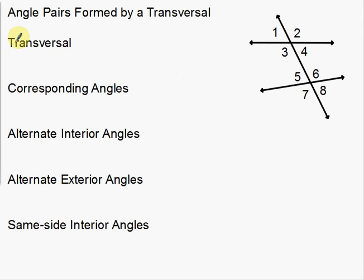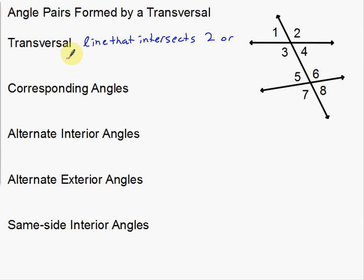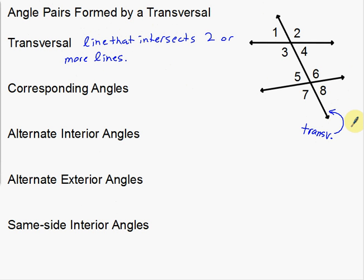A transversal is a line that intersects two or more lines. So in this case, this line down here is our transversal. Transversal — that line right there.